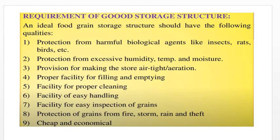Coming to the requirements of a food storage structure — for a quality food storage structure, the following measures are generally carried out: number one, protection from harmful biological agents like insects, rats, and bats; number two, protection from excessive humidity, temperature, and moisture; number three, provision for making the store dustproof, airtight, and erosion-resistant.